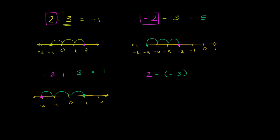So 2 minus negative 3 is the exact same thing as 2 plus positive 3. These two statements are equivalent. And this just boils down to this right over here is just going to be 5.